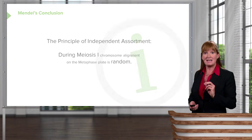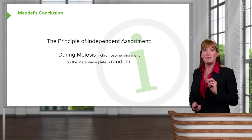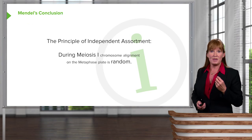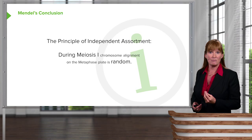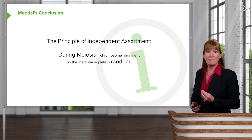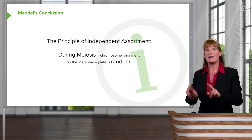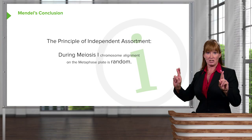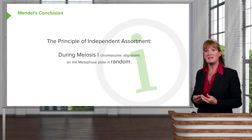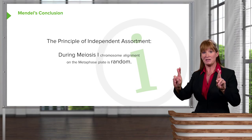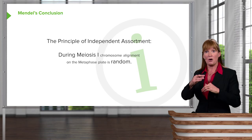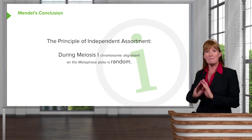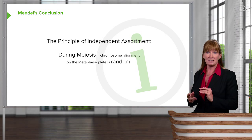The point is, Mendel was able to arrive at the principle of independent assortment. From the monohybrid cross, we got segregation. The principle of independent assortment states that segregation happens, but each trait does so independently of the other trait.